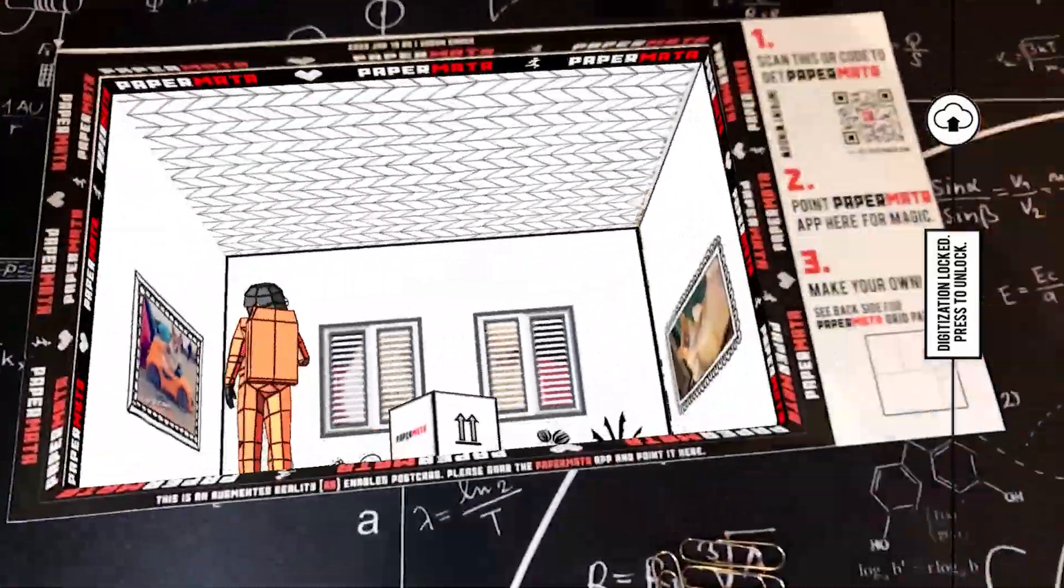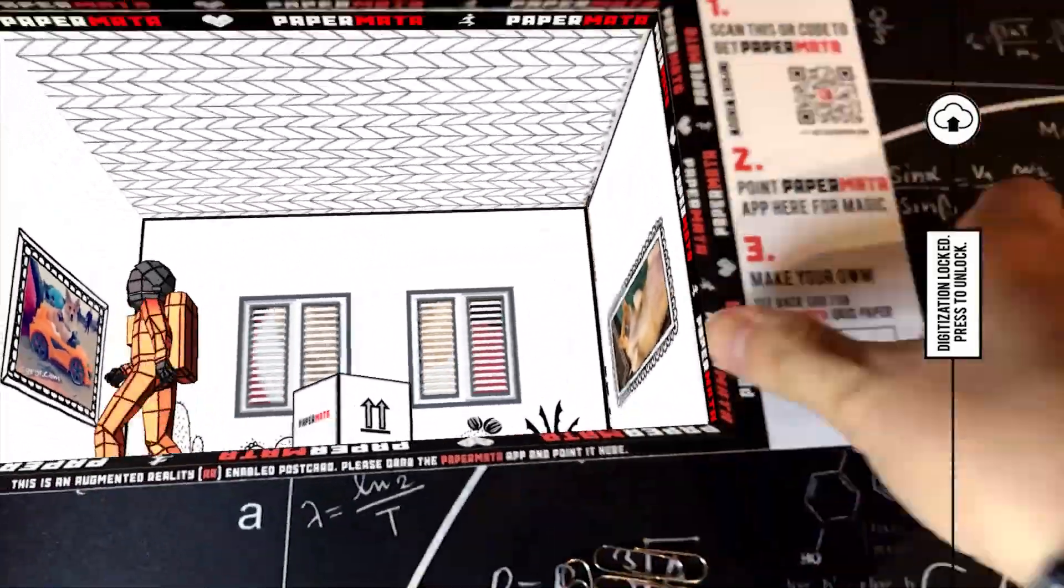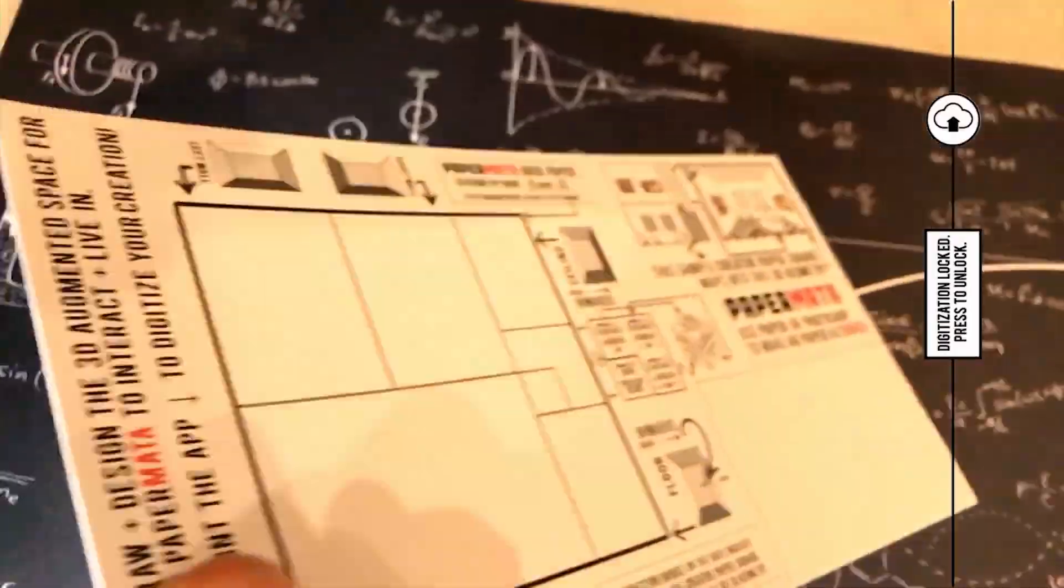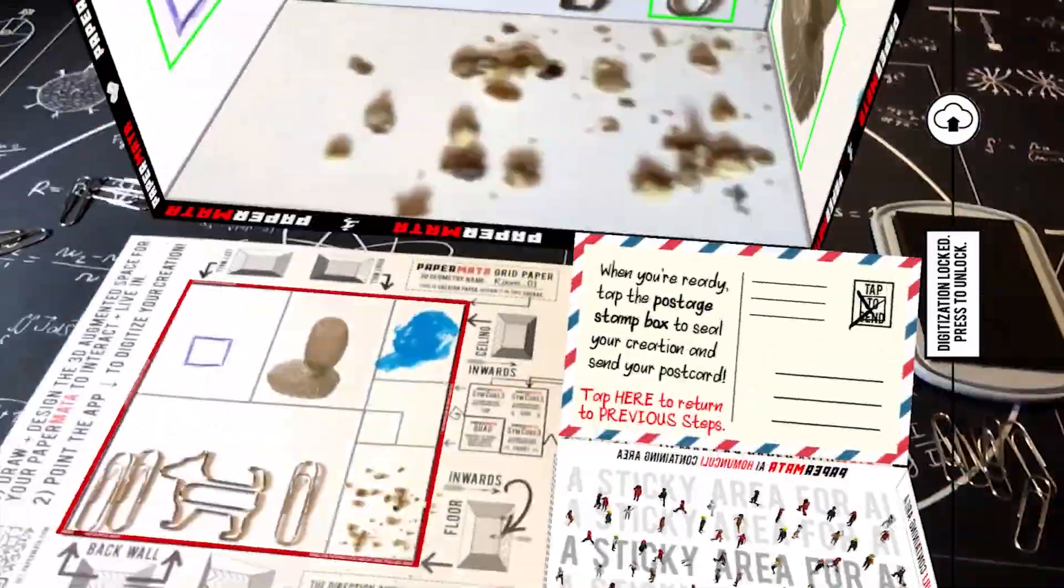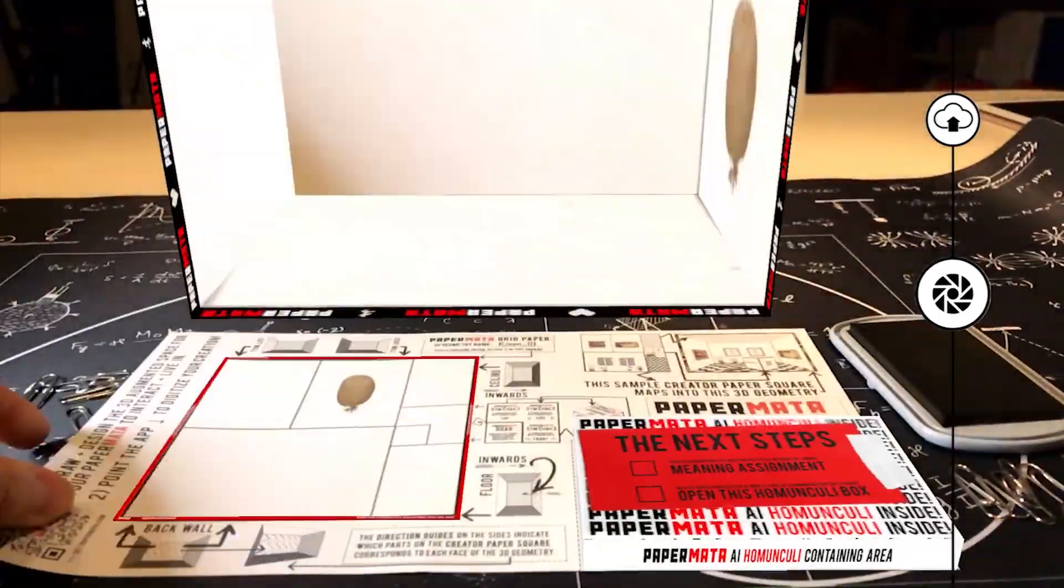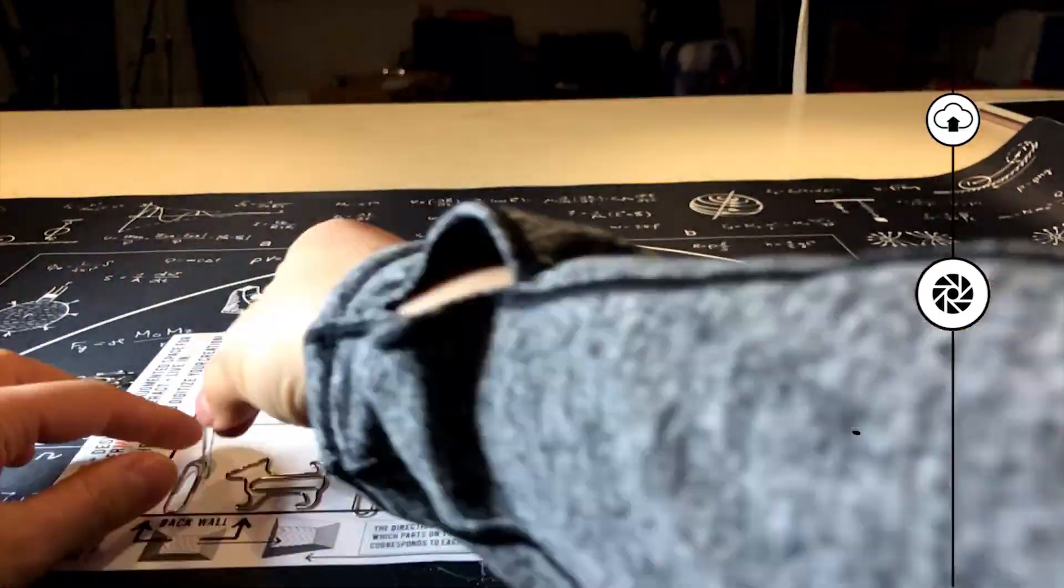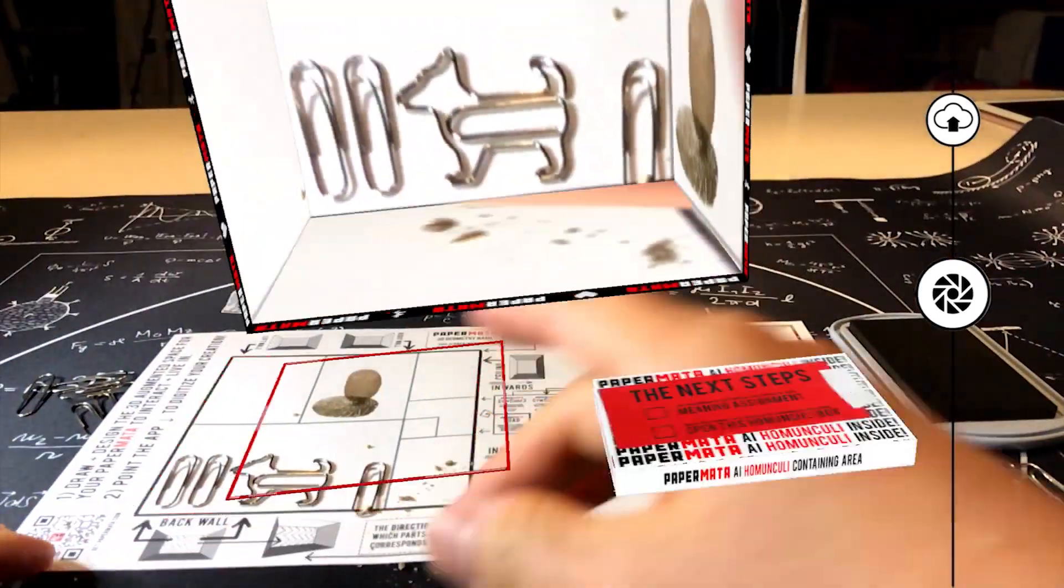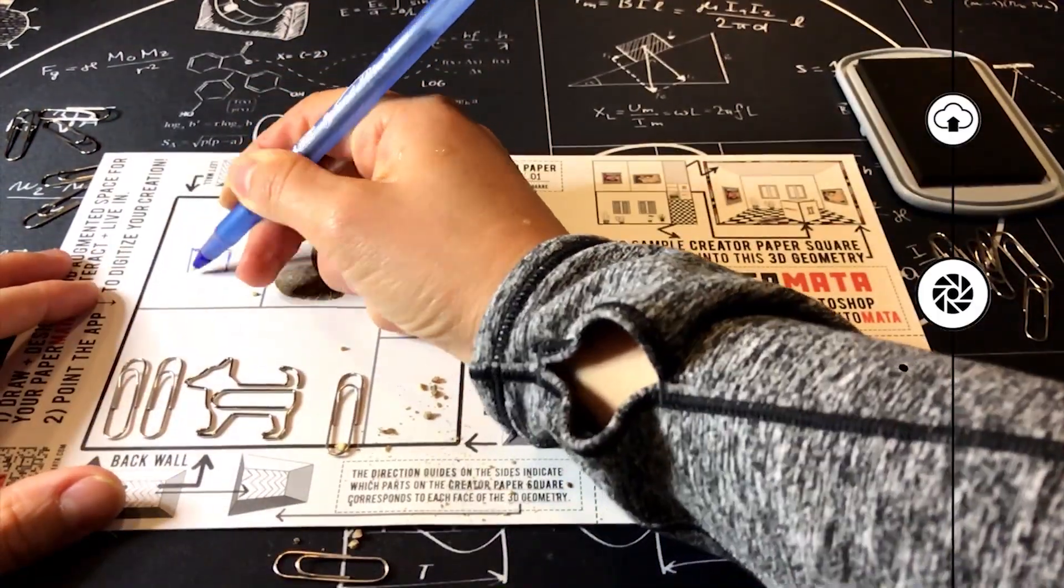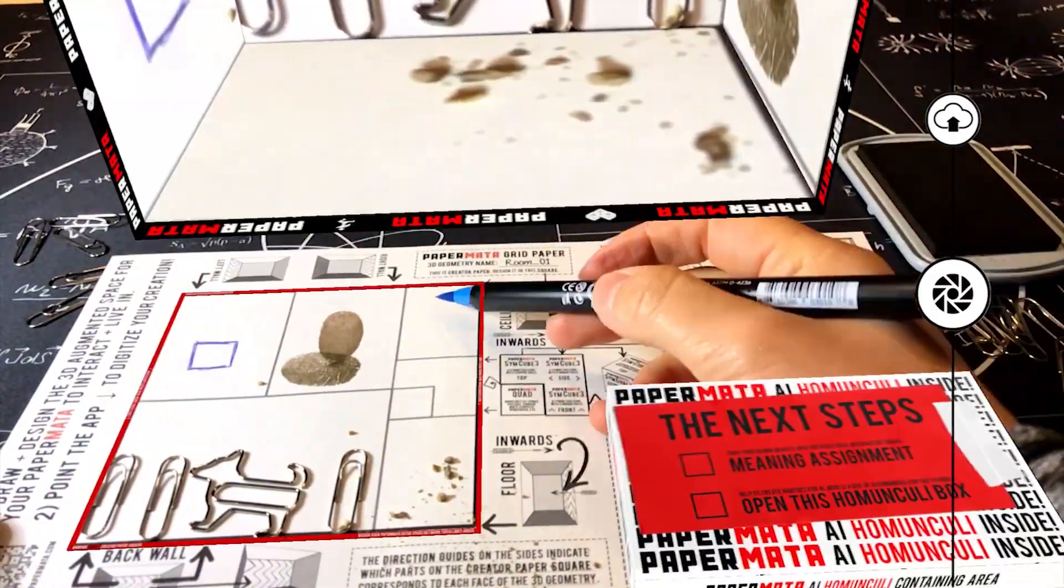Papermata is a postcard medium augmented reality creativity platform inspired by paper automata and inhabited by tiny AI homunculi. Using Papermata creator grid paper, anyone can draw, spill, and splatter real-world things on, and even found object collage to create their own Papermata on paper.